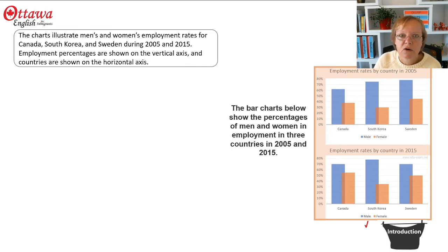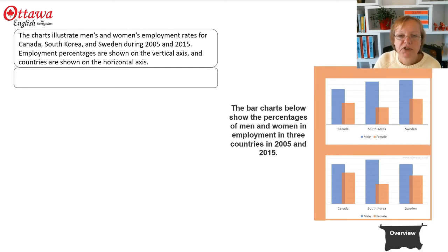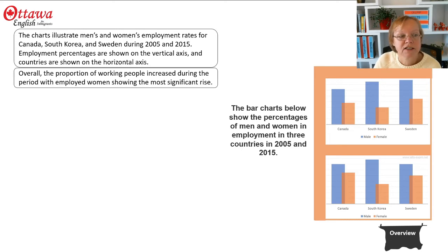So let's go on to our overview. In the overview, you're looking at this picture from the other side of the room, so there are no details — you're just saying what's happening. For us, the overview would be: overall, the proportion of working people increased during the period, with employed women showing the most significant rise.